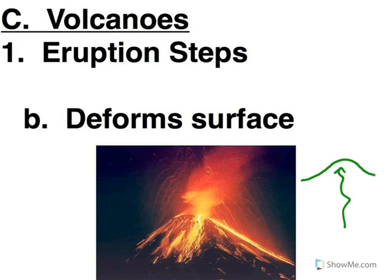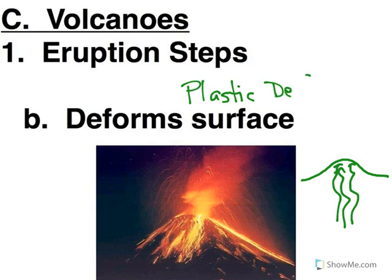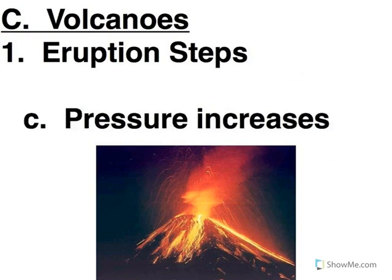In reaction to the magma moving upward, the surface is going to start to deform, and so you're going to get a mound associated with this upward motion — essentially we're looking at some plastic deformation. Tying back into our stress and strain, as that pressure continues to increase and more and more magma starts building up, we are taking the surface to the breaking point.